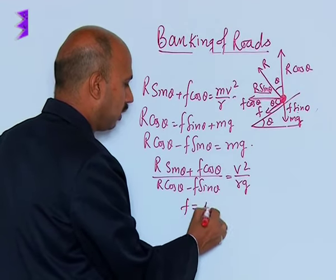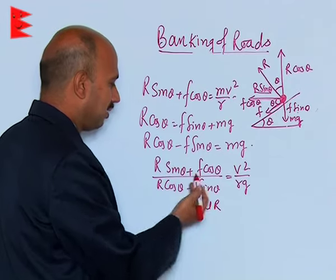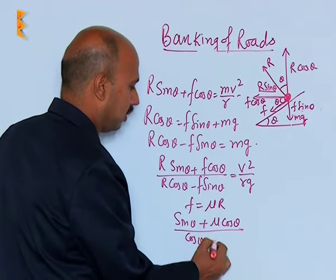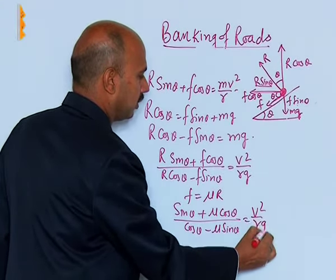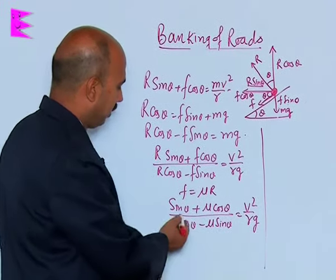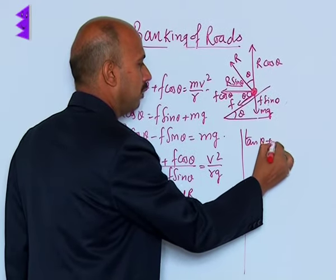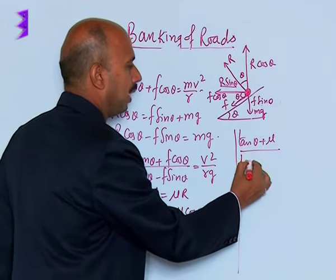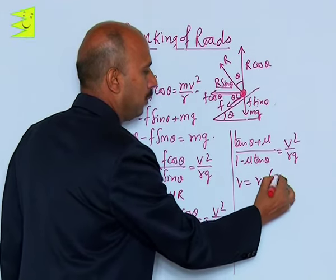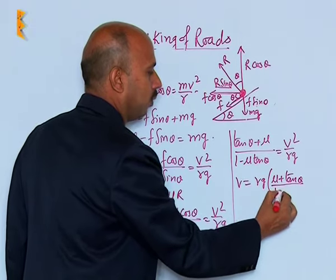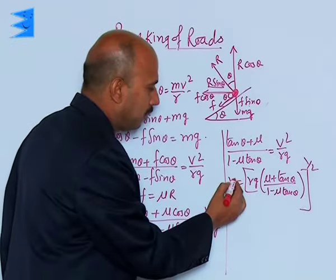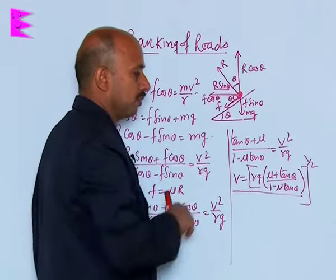Now, dividing these two equations, we get (R sin theta plus f cos theta) divided by (R cos theta minus f sin theta) is equal to v²/rg. Putting f equal to mu R and taking cos theta common, we get (tan theta plus mu) divided by (1 minus mu tan theta) is equal to v²/rg. So v is equal to the square root of rg times (mu plus tan theta) divided by (1 minus mu tan theta). This is the speed required, which depends on mu as well as theta.